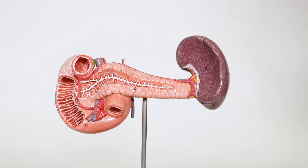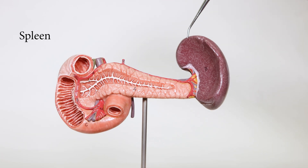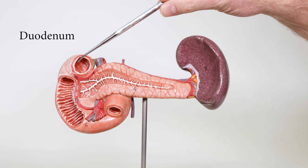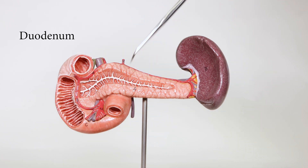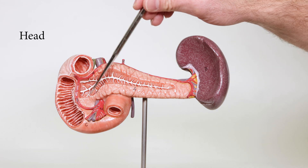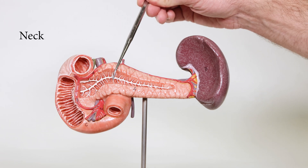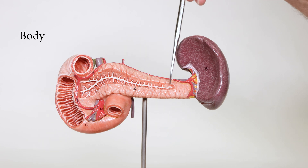Here we're looking at a model showing the pancreas, the spleen, and part of the duodenum. For the pancreas itself, you can see the pancreas has the head, the neck, the body, and the tail regions.